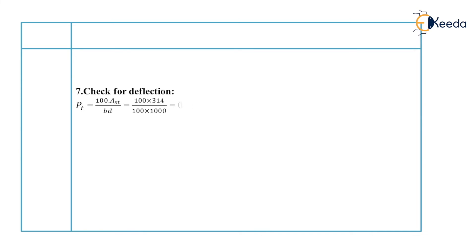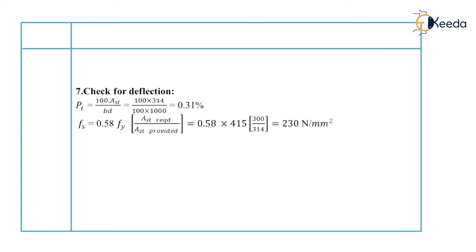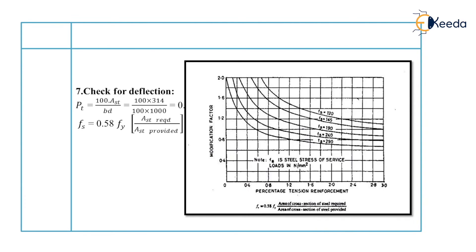Next check is for deflection. We find the percentage of steel: pt equals 100 × AST provided / (B × d) equals 100 × 314 / (1000 × 100) equals 0.31%. We find the steel stress fs equals 0.58 × fy × (AST required / AST provided) equals 230 N/mm². From Figure 4 of IS 456-2000, the modification factor Kt is approximately 1.55.